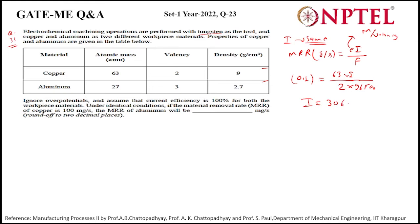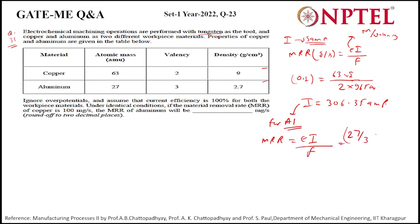The same current is used for aluminum. For aluminum, the MRR = E·I / F, where E changes to 27/3. Using I = 306.35 A and F = 96500, we calculate the MRR for aluminum as 0.028 grams per second.